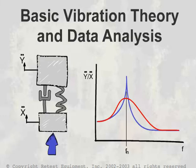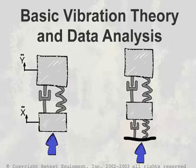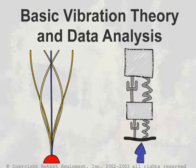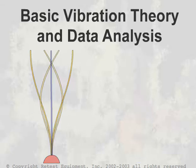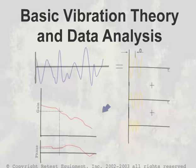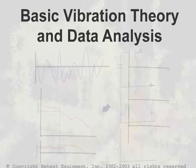At this point in the class we go back to theory again so that we can learn some basic concepts that will be used later. We start with a simple single degree of freedom system and work our way through to a distributed parameter, infinite degree of freedom system.